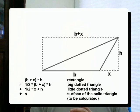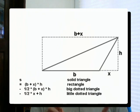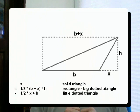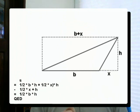So, all we need to do is take that h times b plus x and subtract the sizes, the areas, of the two dotted triangles to get what's left over, which is the original triangle. And as you can see again, that adds up to a half times b times h.